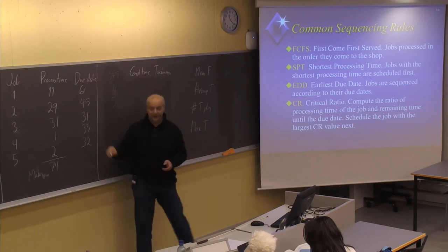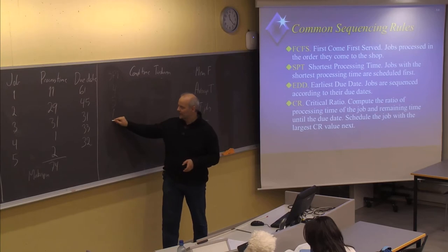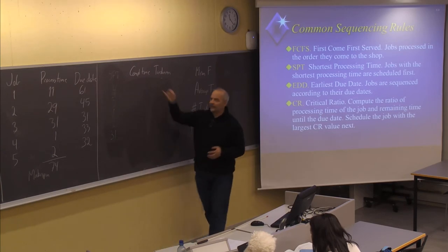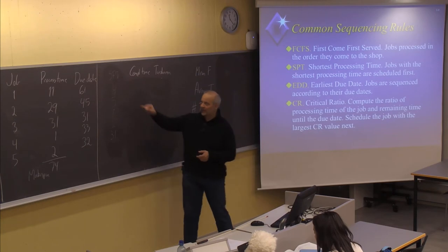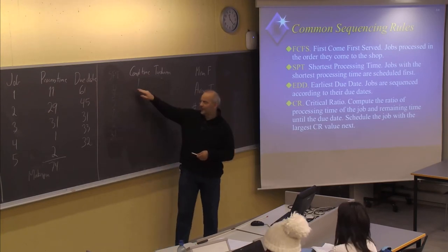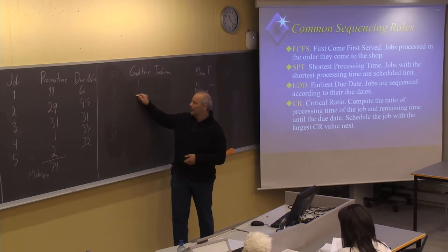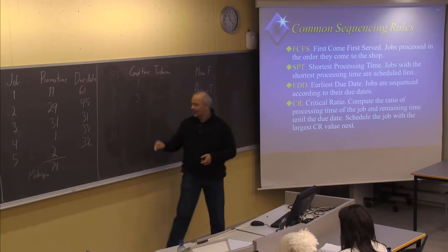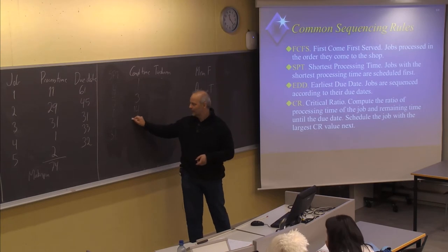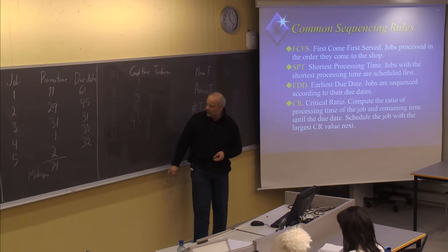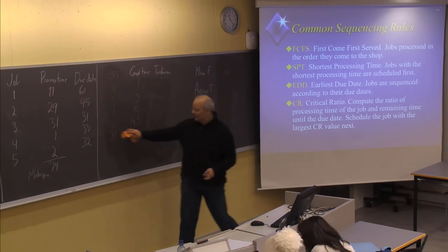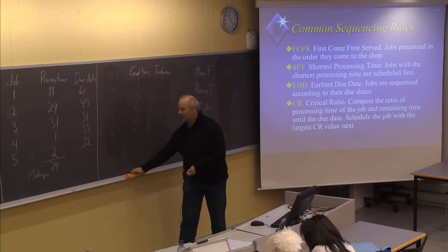Job number one is 11 days. Job number two is 29 days. And job number three is 31 days. The completion time, or flow time, will be 1 for job number four. Job number five will be finished after three days — it has to wait one day, then it takes two days. Job number one will take 11 more days, giving 14. Job number two, 29 more days, giving 43. Job number three, which takes 31 days, will then be finished by day 74.